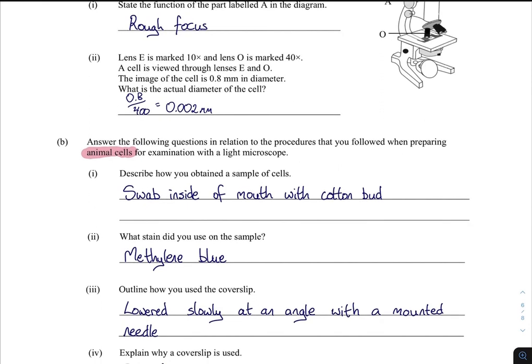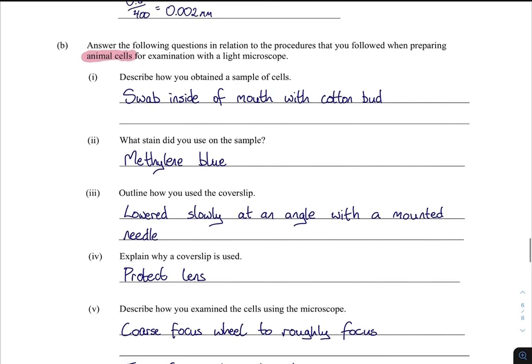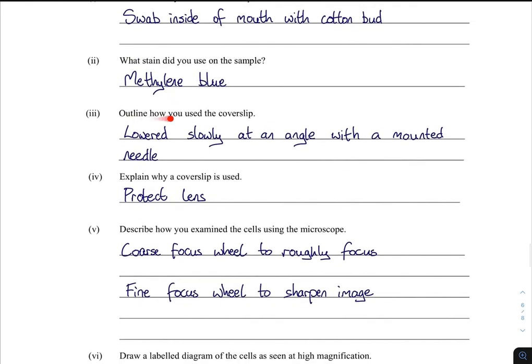Part B is answered incorrectly by students all the time — they don't read the question. The question asks about preparing animal cells for examination with the light microscope, and many students go straight to plant cells. Highlight it: animal cells. How did you obtain animal cells? Swabbed the inside of the mouth with a cotton bud. What stain did you use? Methylene blue — not iodine. Outline how you use the cover slip: lower it slowly at an angle with a mounted needle. Explain why the cover slip is used: to protect the lens. The cover slip is applied at an angle to reduce air bubbles — those are two different questions, so be careful.